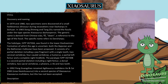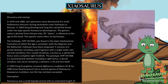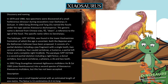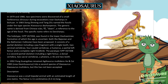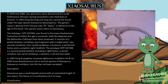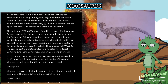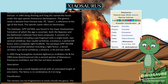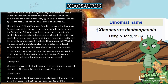The paratype IVPPV6730B is a second partial skeleton including a right femur, a dorsal vertebra, two sacral vertebrae, a phalanx, a rib, and two teeth. In 1992, Peng Guangzhou renamed Agilosaurus multidens into a second species, Shiasaurus multidens, but this has not been accepted.